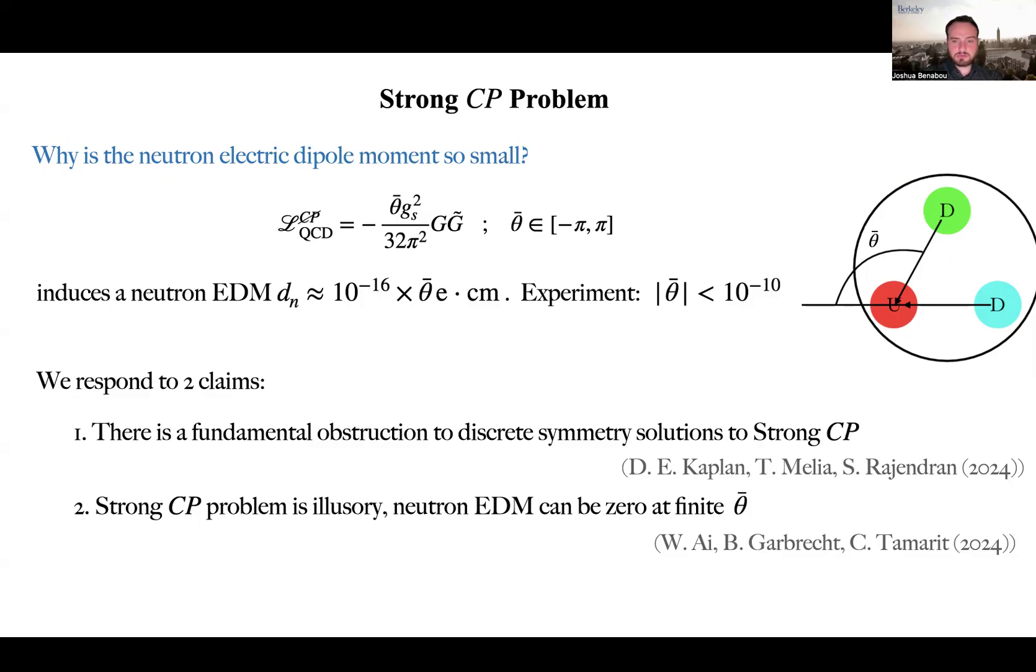We also respond to claims by I, Garbrecht, and Tamarit that the strong CP problem would be illusory, meaning that for any value of theta bar, the neutron EDM would be zero.